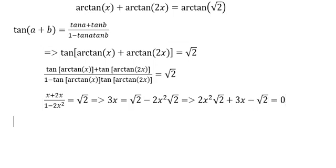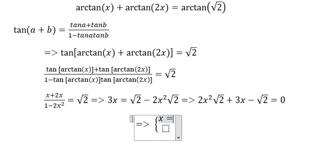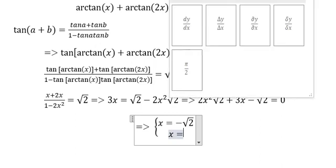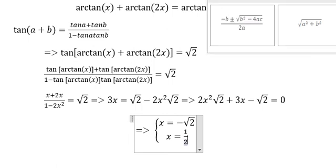Then we can find the final result. X equals minus square root 2, and x equals 1 over 2 multiplied with square root 2.